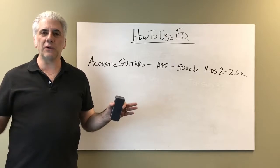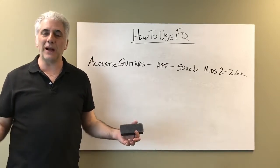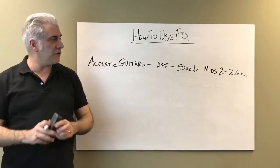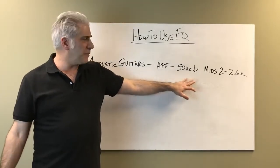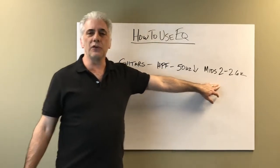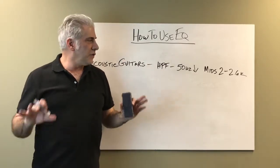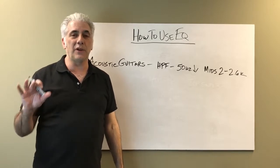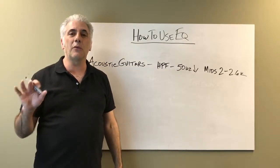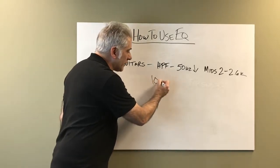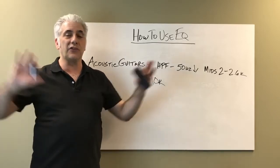Acoustic guitar is hard to generalize since all acoustic guitars sound different — drop tunings and open tunings affect where the low end sits, and capos change things too. Typically I filter out everything under 50 Hz. The presence of your acoustic guitar is usually around 2k to 2.5k — that's where you make it jump out of the mix, though you have to be careful as that's also where piano presence lives. To make it sparkle, I'll often boost at 10k when tracking to give some extension on the top end.